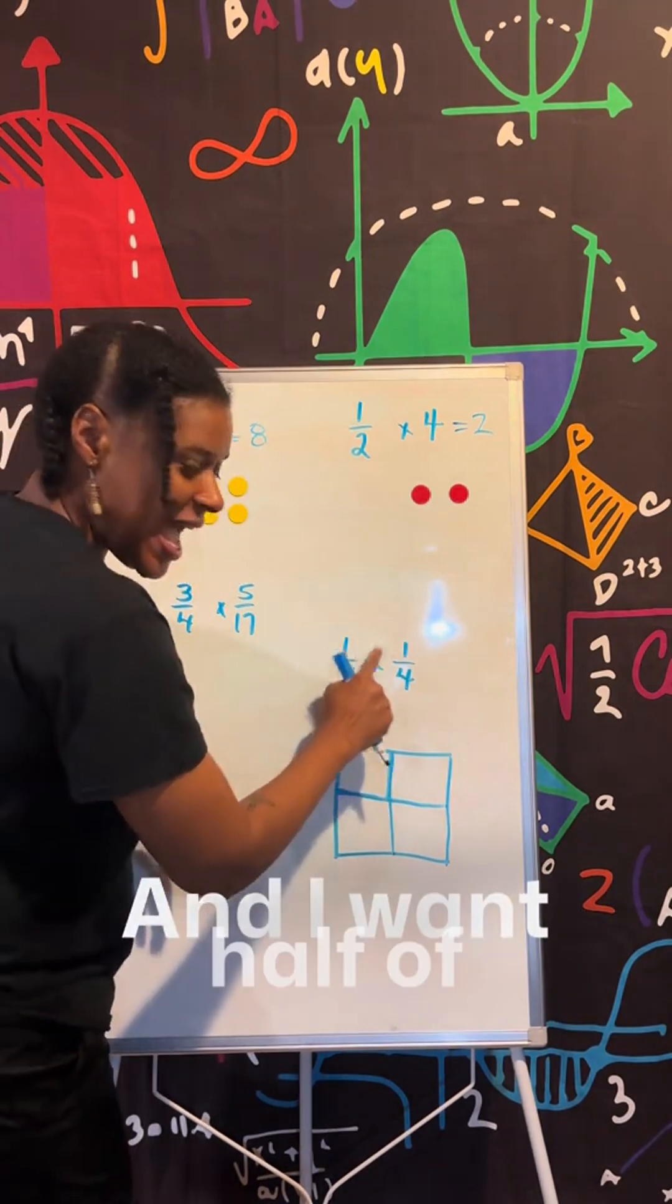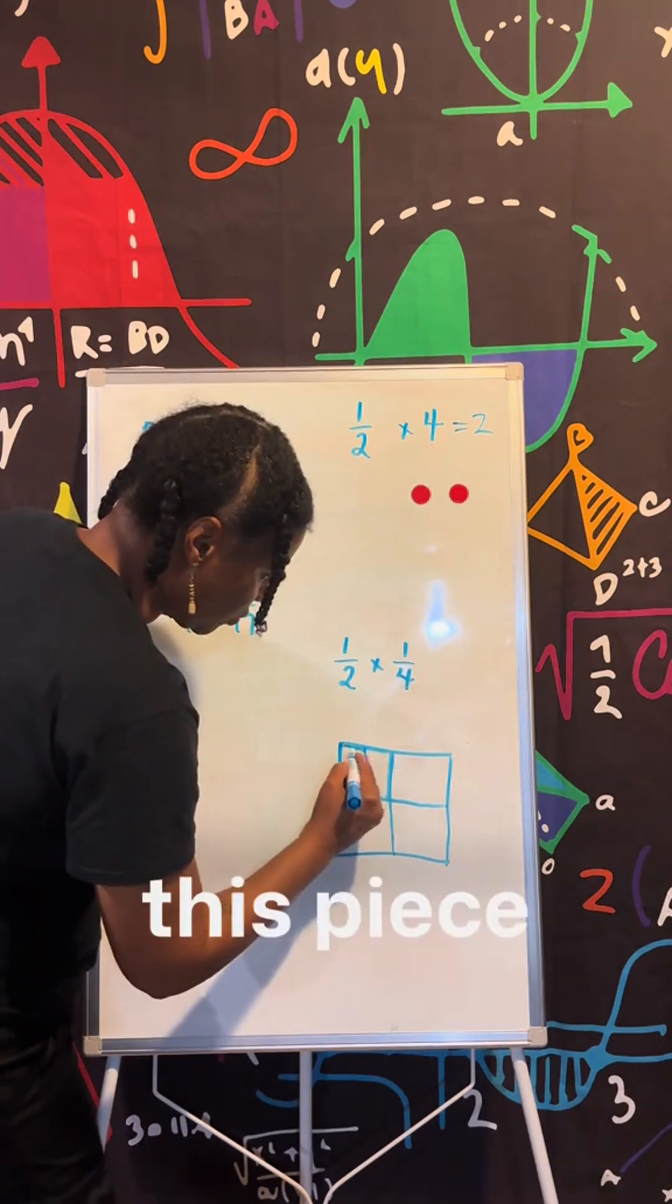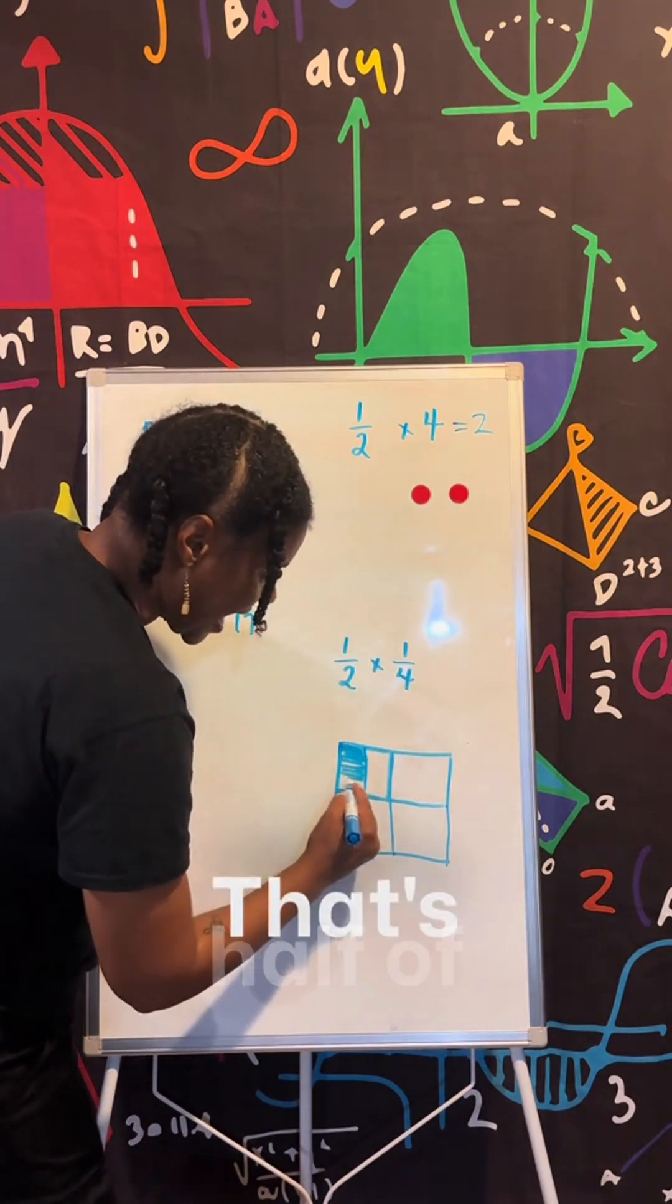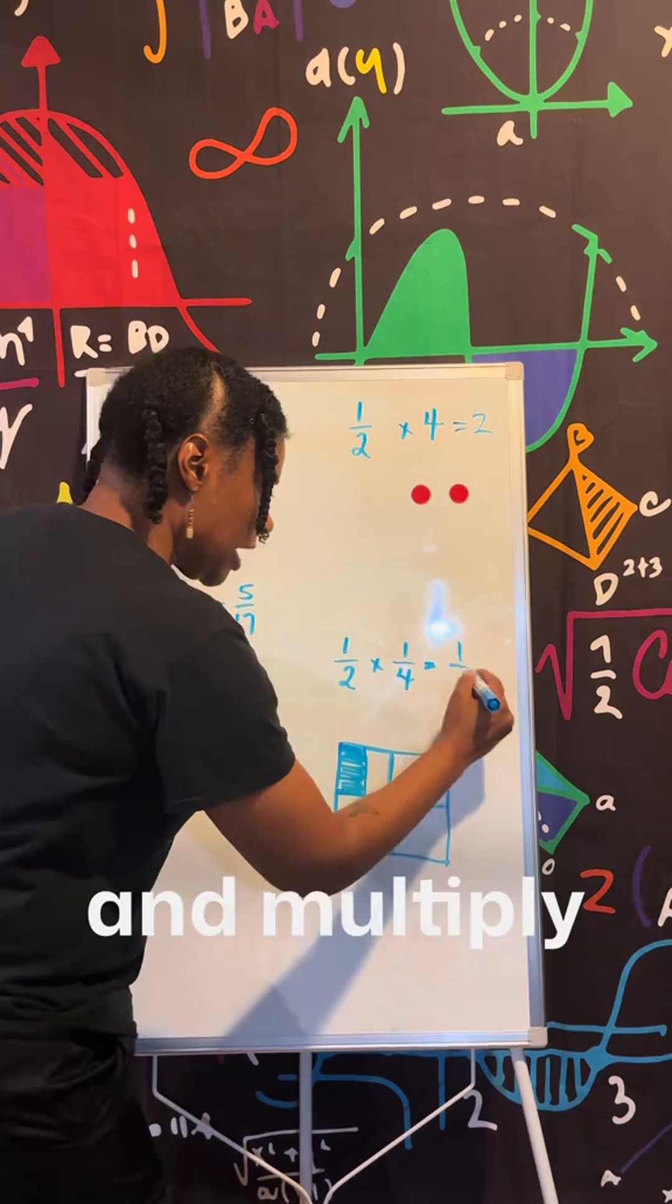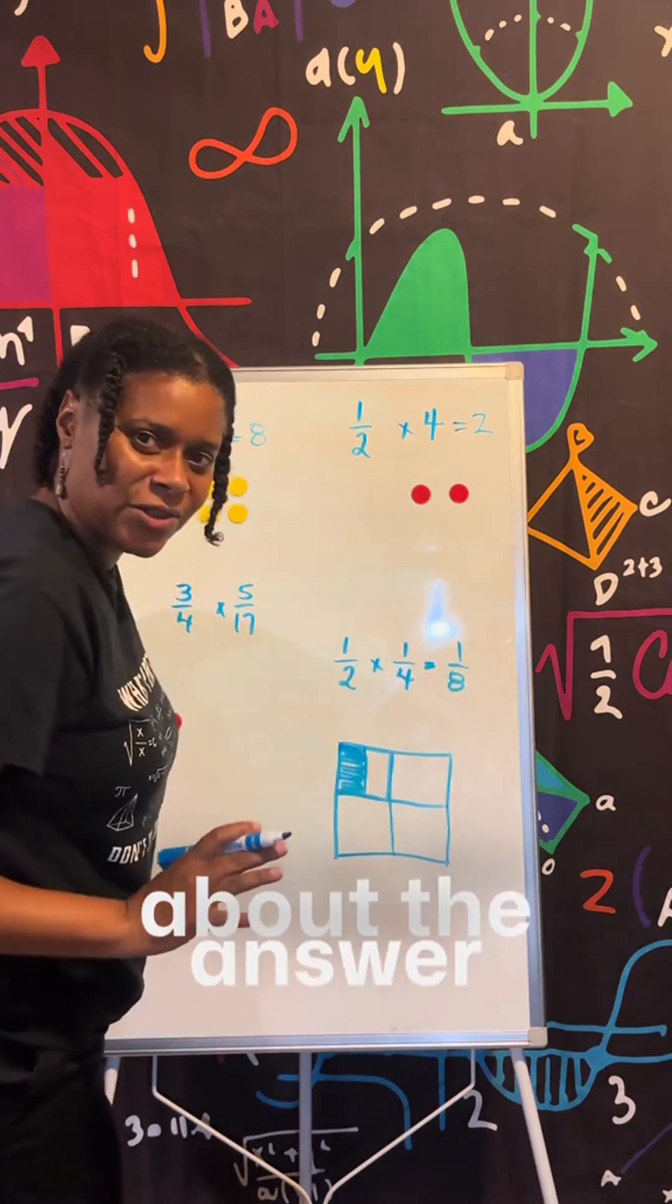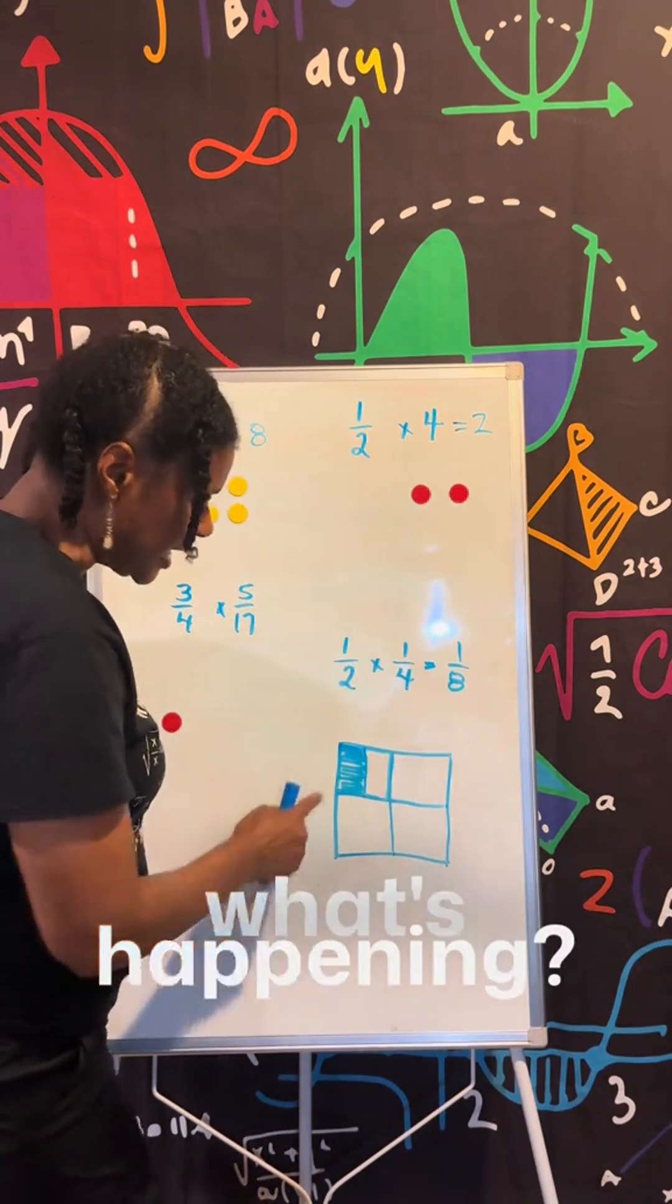OK, and I want half of a fourth. So that means I want just this piece right here. That's half of a fourth. Now, of course, I can go through and multiply across. I'm not concerned about the answer. We're always trying to get to the answer. Do they understand what's happening now?